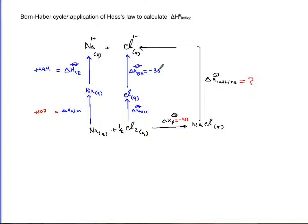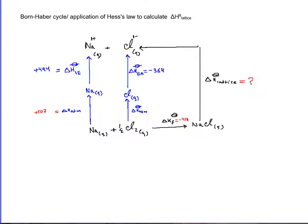Now delta H atomization of chlorine. For diatomic gases you should also find it. That's table 10, average bond enthalpies. If you go after chlorine you see it's 242, meaning that if you take chlorine covalently bonded to chlorine, break it into Cl gas and Cl gas, you need to spend 242 kilojoules per mole.